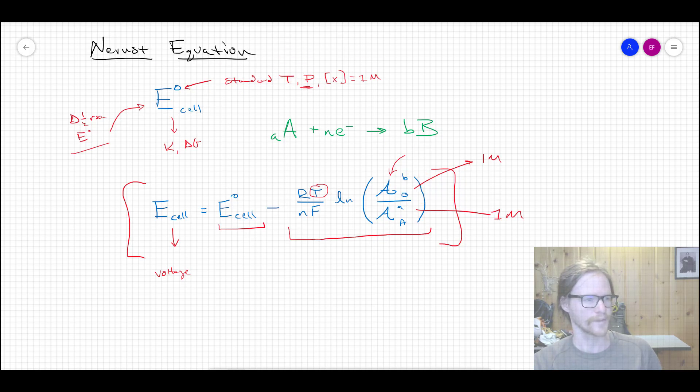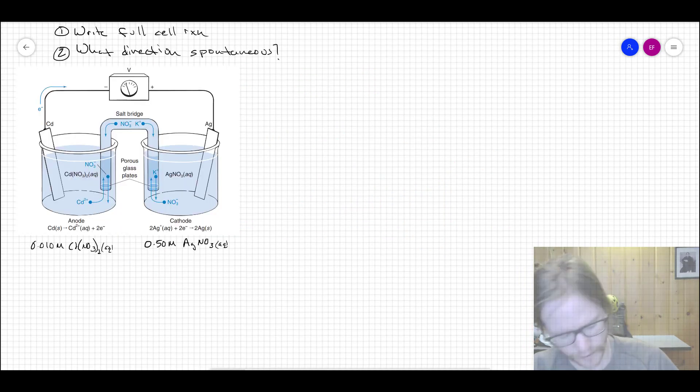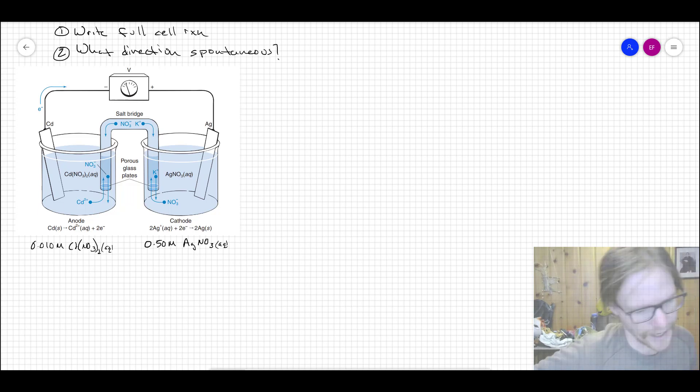Let's put the Nernst equation to work in a system or in a cell that doesn't have everything assumed to be one molar. What we have is this cell that we've talked about before, you're familiar with it, but we never had specific concentrations listed. So now I just threw up real concentrations. In the left cell we've got 0.01 molar cadmium nitrate, and in the right cell we have 0.5 molar silver nitrate. I want to answer two questions: one, let's write the full cell reaction, and then what direction is the cell spontaneous, which requires us to compute Ecell not E°cell.